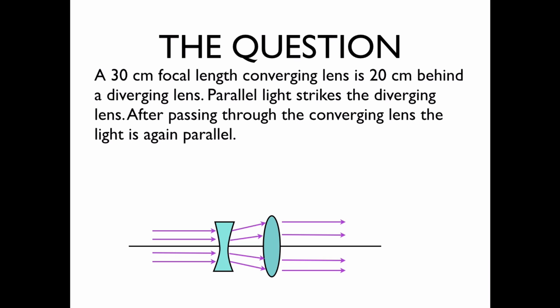A 30 centimeter focal length converging lens is 20 centimeters behind a diverging lens. Parallel light strikes the diverging lens. After passing through the converging lens, the light is once again parallel. We'd like to know what is the focal length of the diverging lens?